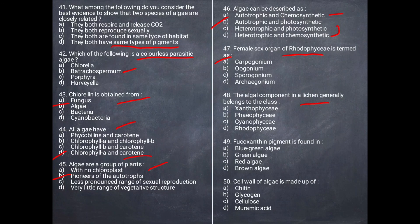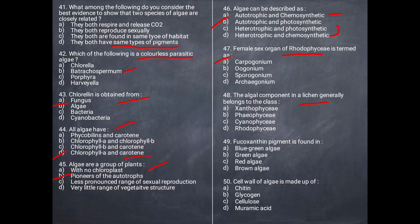Next question: The algae component in a lichen generally belongs to which class? Lichen is composed of algae and fungi. The algae in lichen belongs to the class Chlorophyceae (green algae).